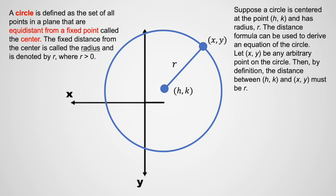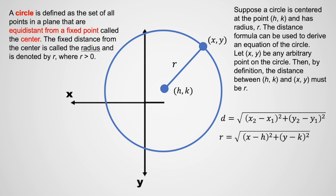Let x, y be any arbitrary point on the circle. Then by the definition, the distance between h, k and x, y must be r. So using the distance formula, r is equal to the square root of x minus h quantity squared plus y minus k quantity squared. Squaring both sides gives us r squared is equal to x minus h quantity squared plus y minus k quantity squared. Now we have the equation of the circle.